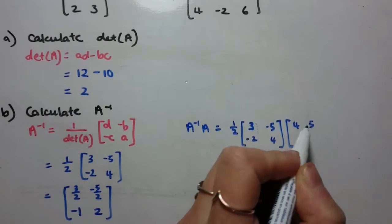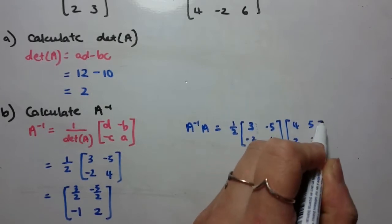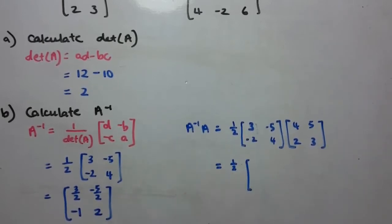And the reason I'm not using the form with all of the fractions is because fractions can be annoying to multiply. So I'm just going to leave that scalar out the front for the moment, and then I'll multiply it in.